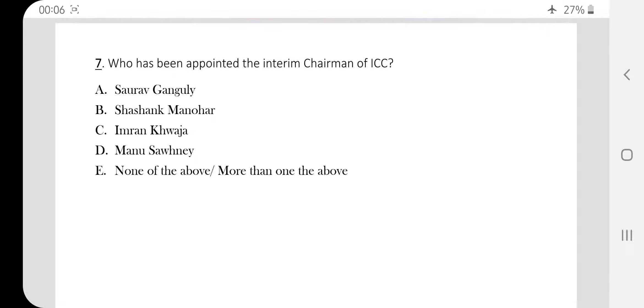Question number seven. Who has been appointed the interim chairman of ICC? The answer is option C, Imran Khwaja.